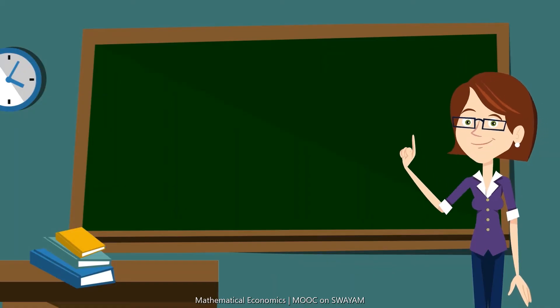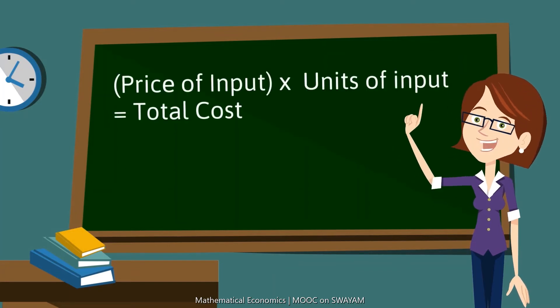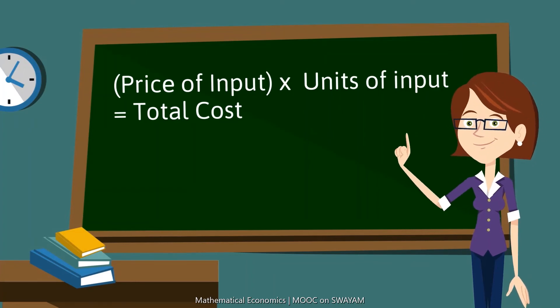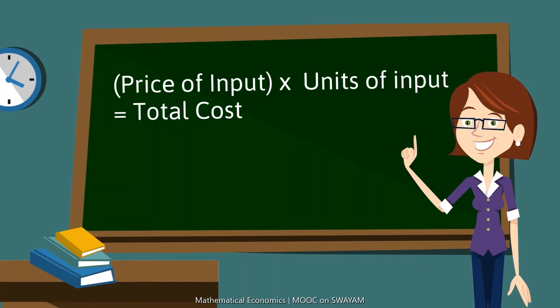Simple mathematics says that multiplying the price and units of an input will give the total cost of the input. So, by this logic, multiplying matrix P and matrix Q must give the input bill.